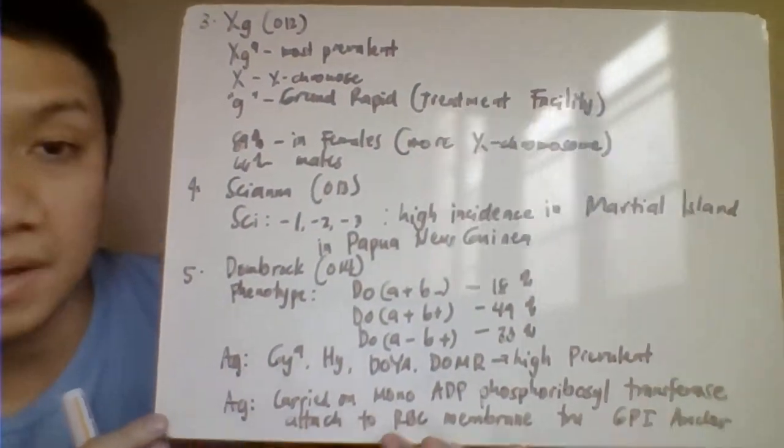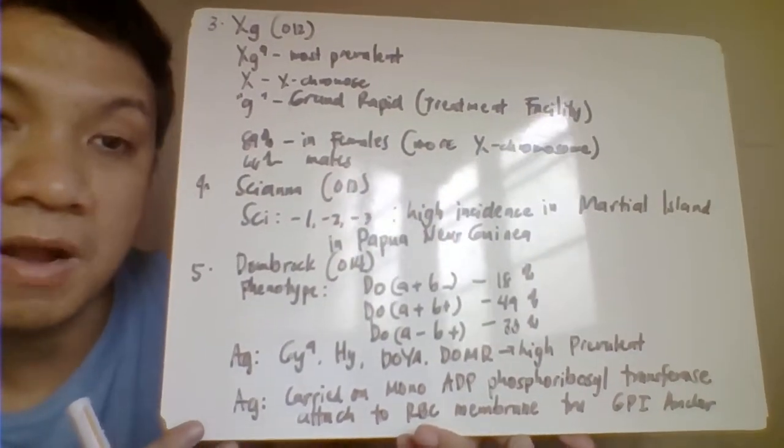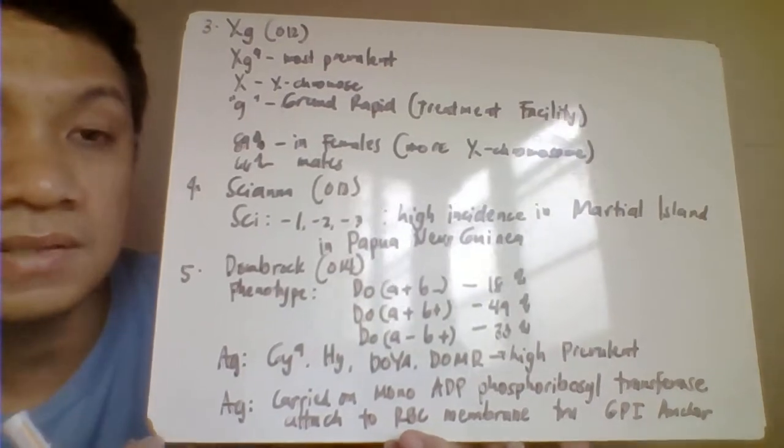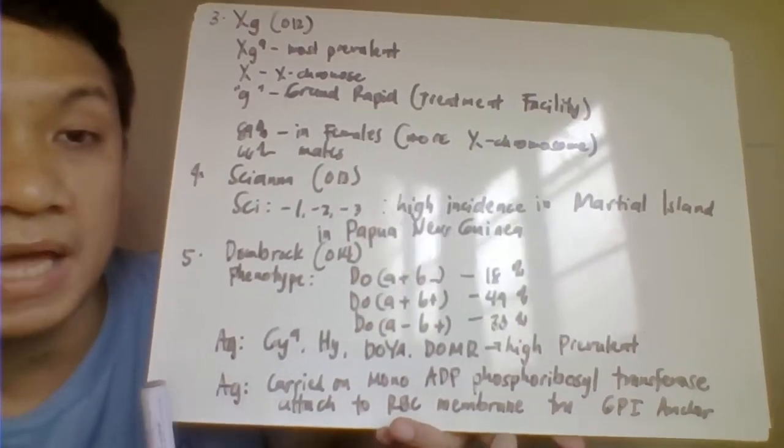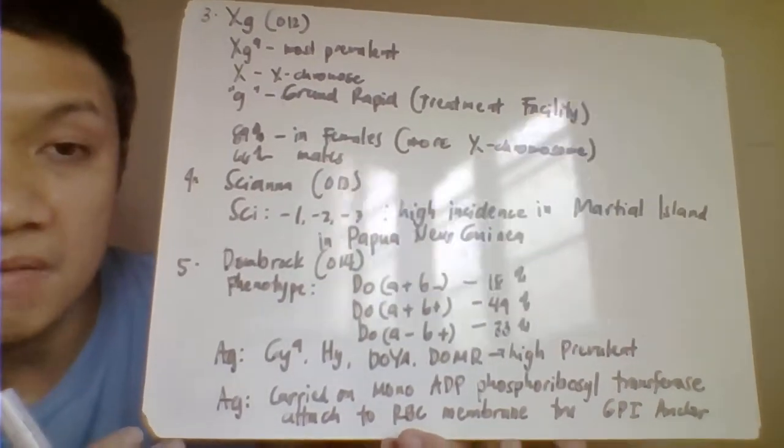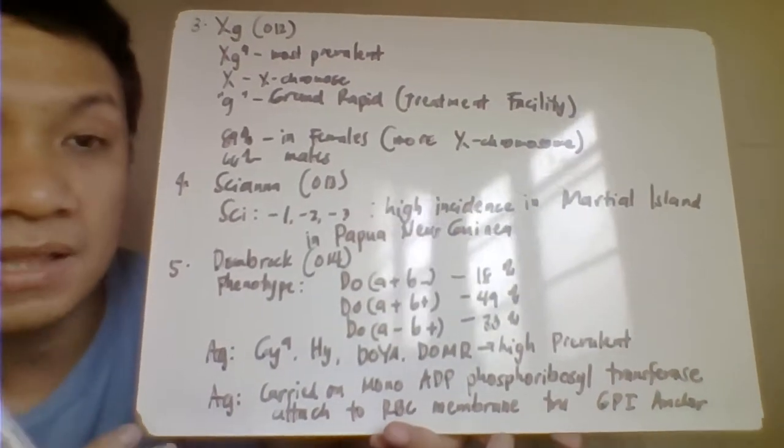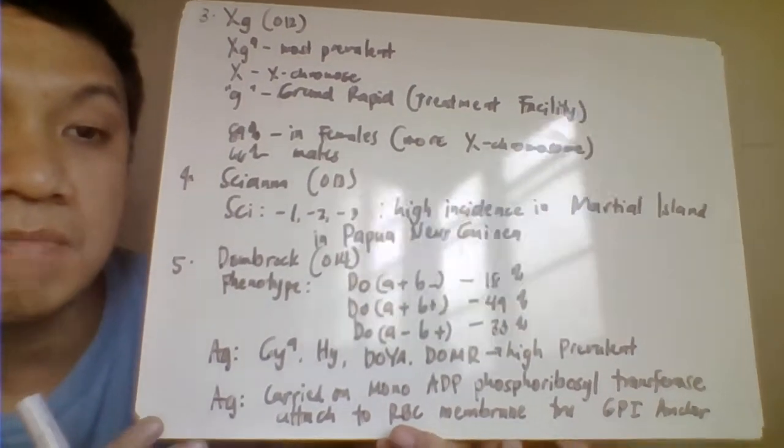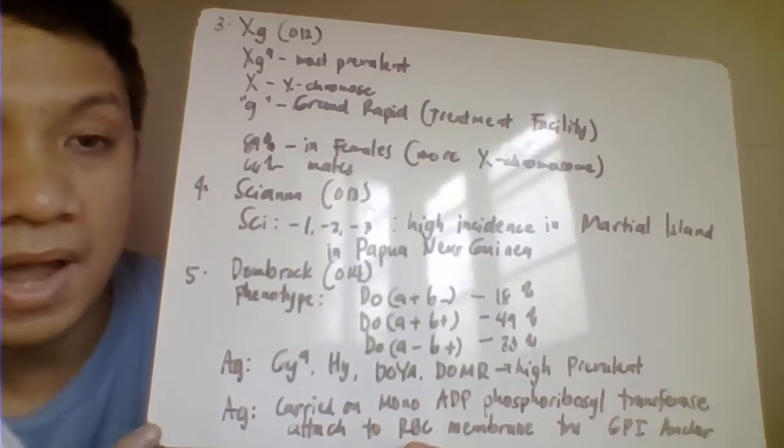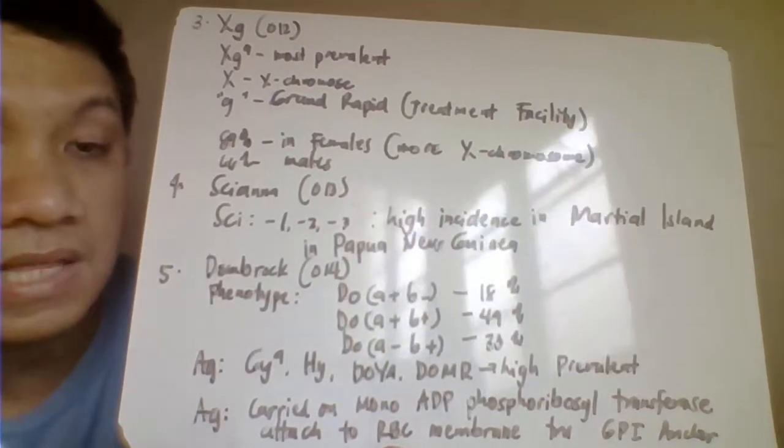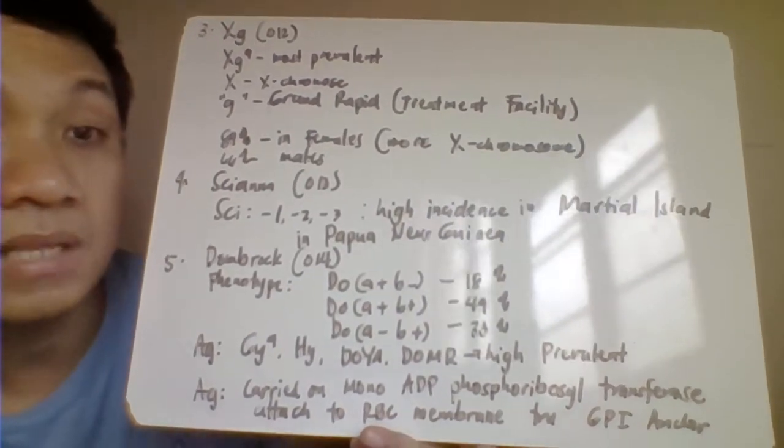Next, we have your XG for the X chromosome. We are expecting that this blood group here has much higher incidence or prevalence among the female population because of the X, they have more X chromosomes. The most prevalent antigen under this blood group is XG A because the mode of inheritance is controlled by the X chromosome. And GE for the Grand Rapid. Grand Rapid is a place or treatment facility where eventually the first individual with this blood group has been identified or being treated.